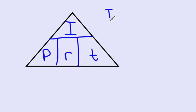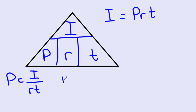We know I equals PRT. What if we wanted to solve for P? If we covered up the P here, we would be left with I equals, or I divided by R times T.